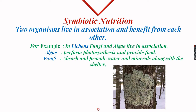Symbiotic nutrition is another type in which two organisms live in association and both benefit from each other. A common example is lichens, in which fungi and algae live in association. The algae performs photosynthesis and provides food to the fungus, while the fungus provides shelter as well as water and minerals which it absorbs from the surroundings.